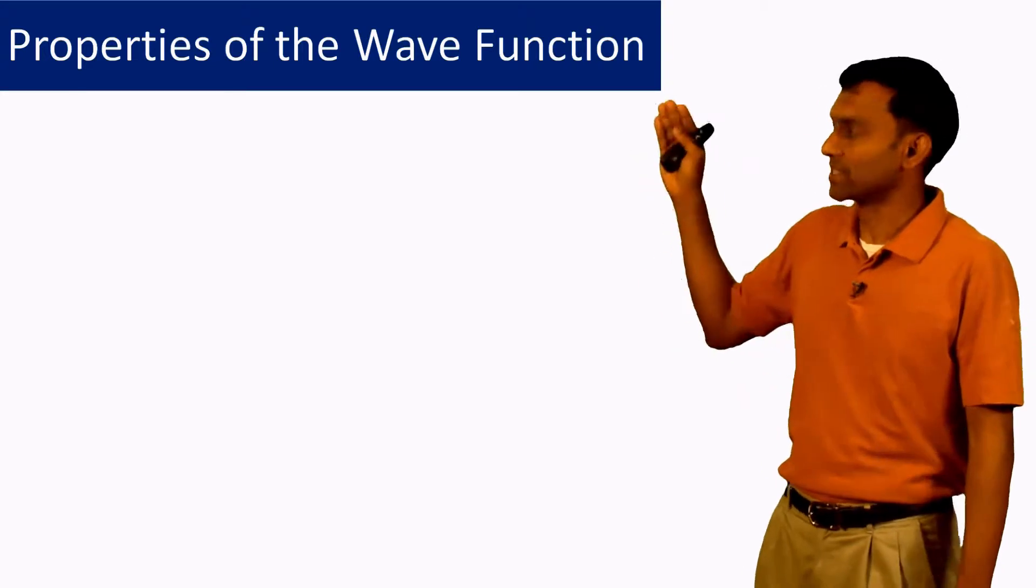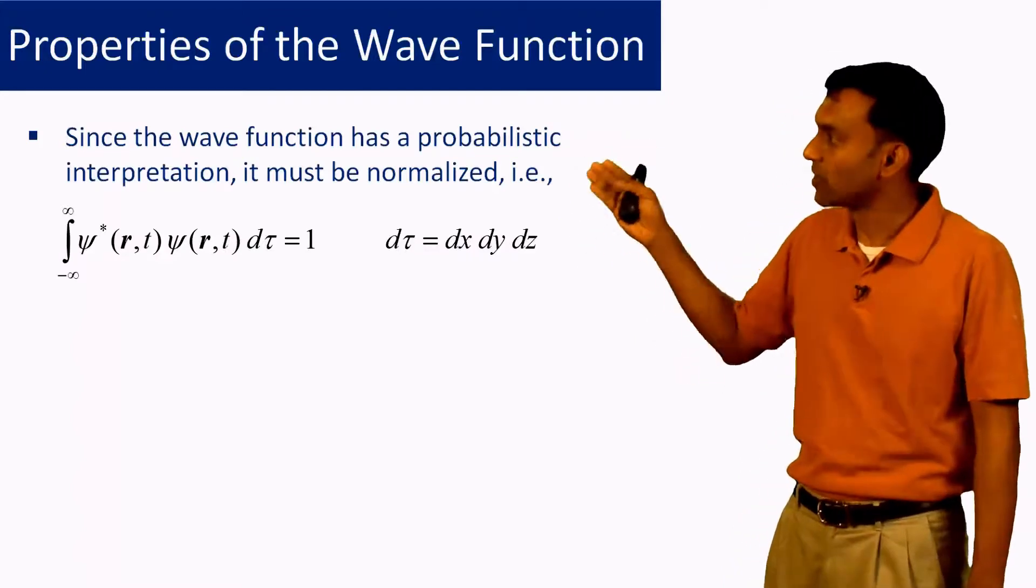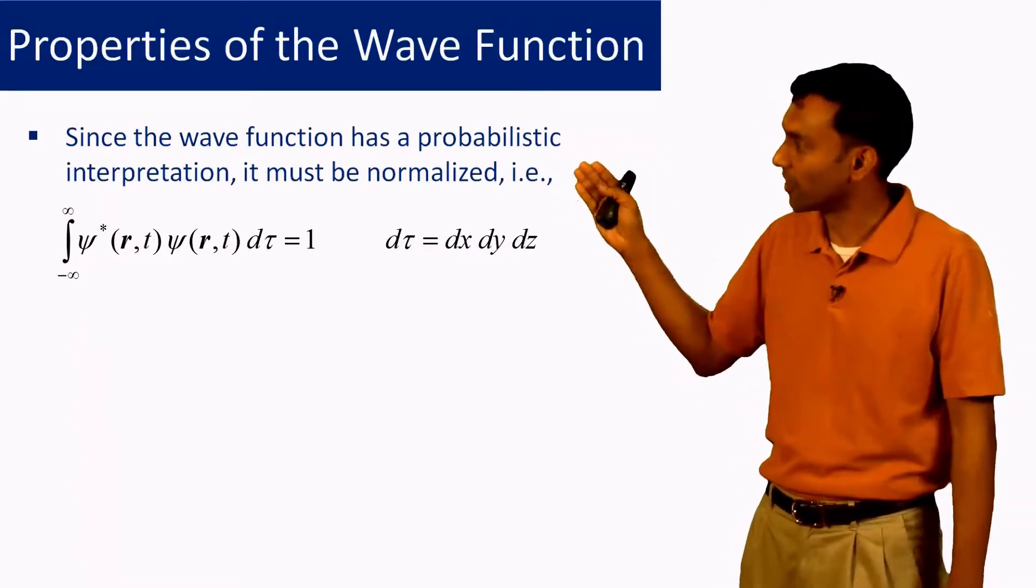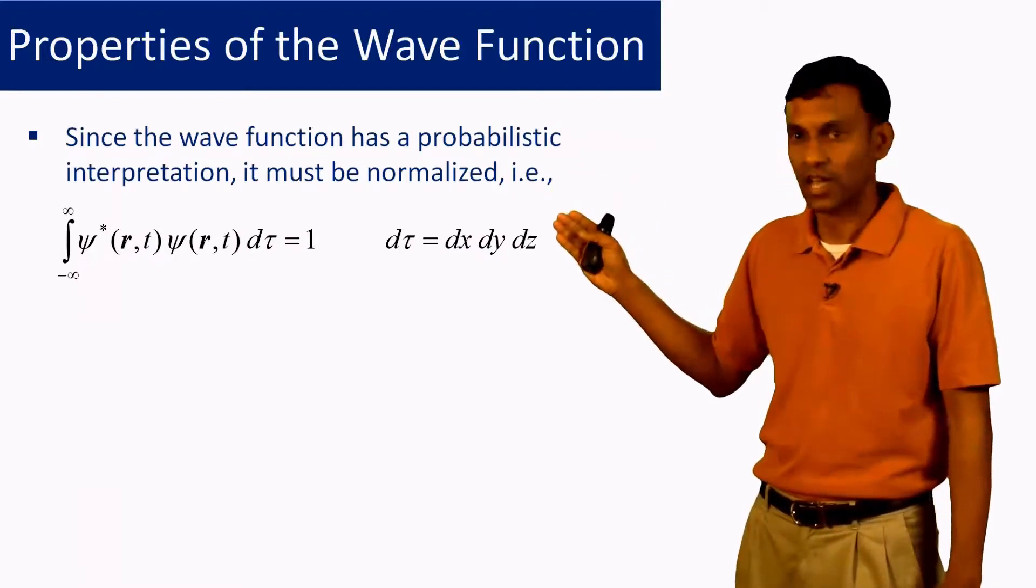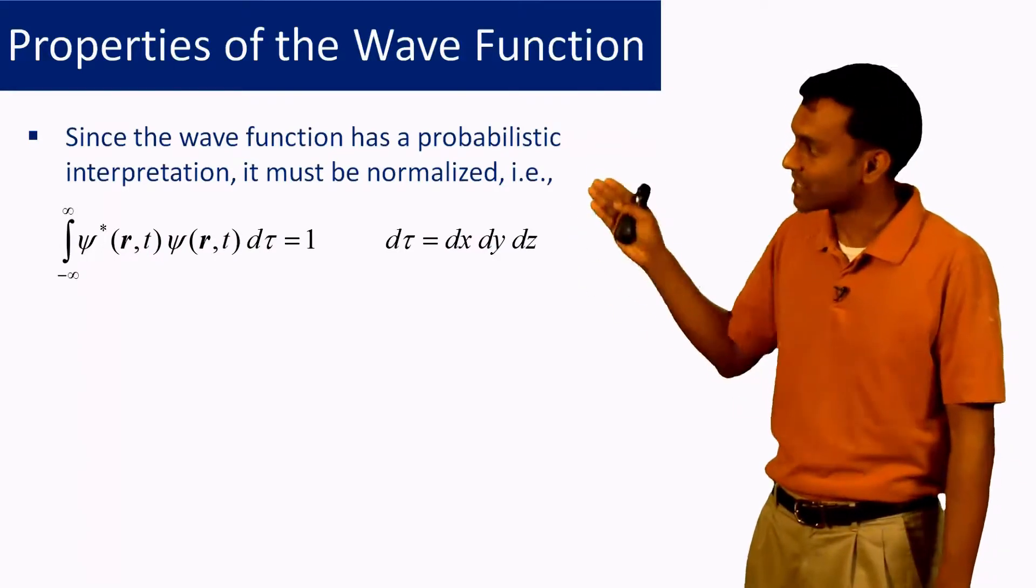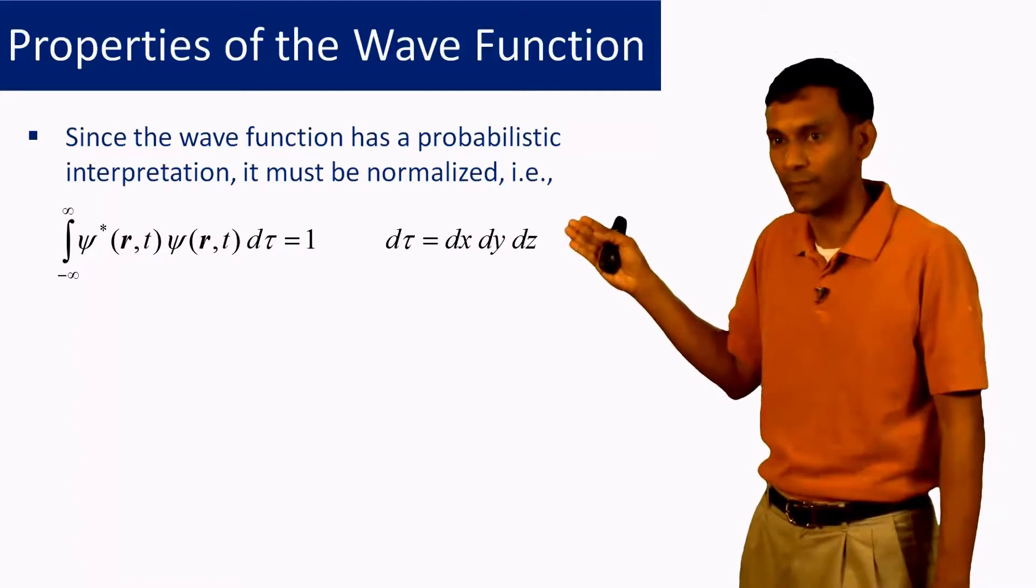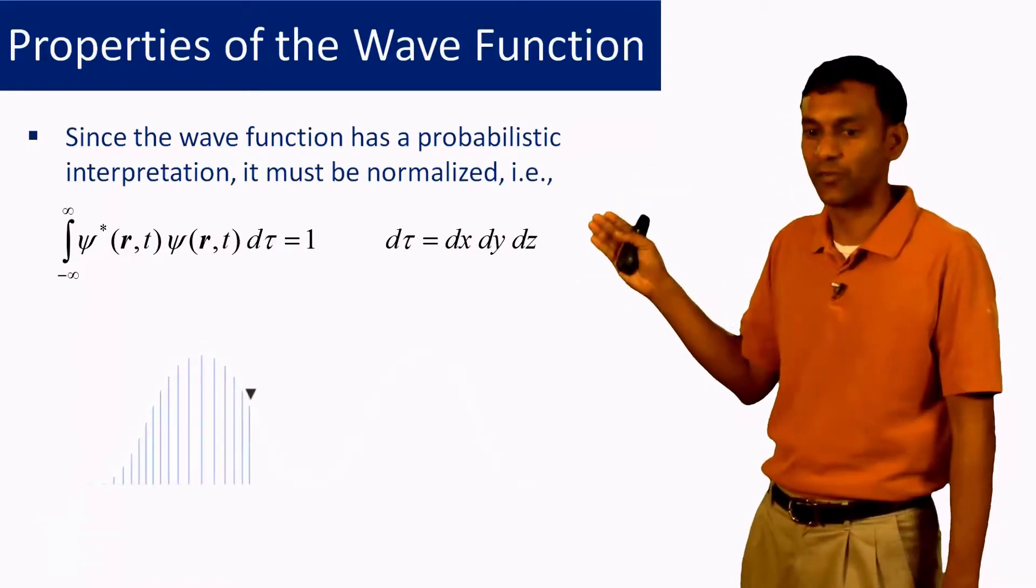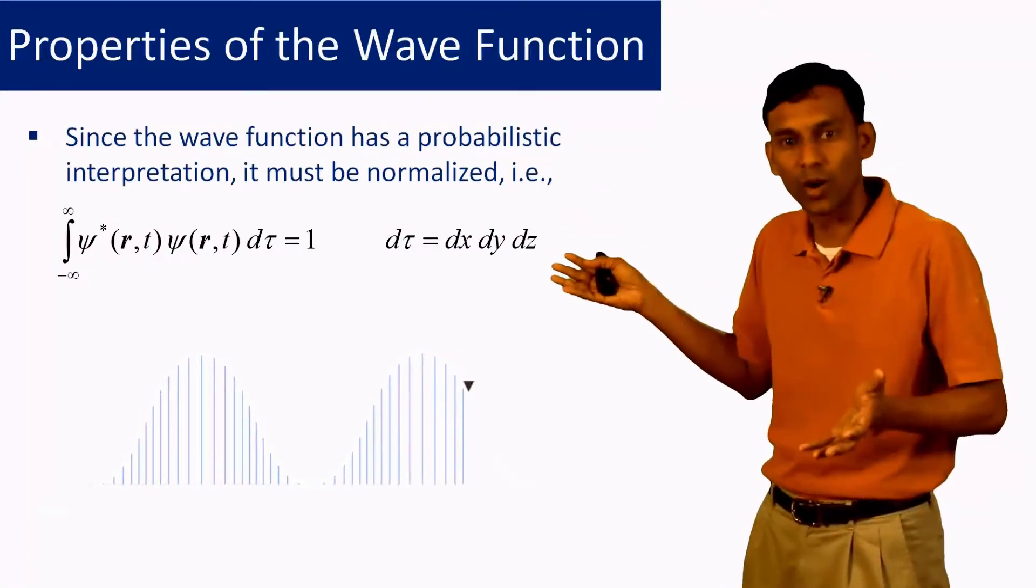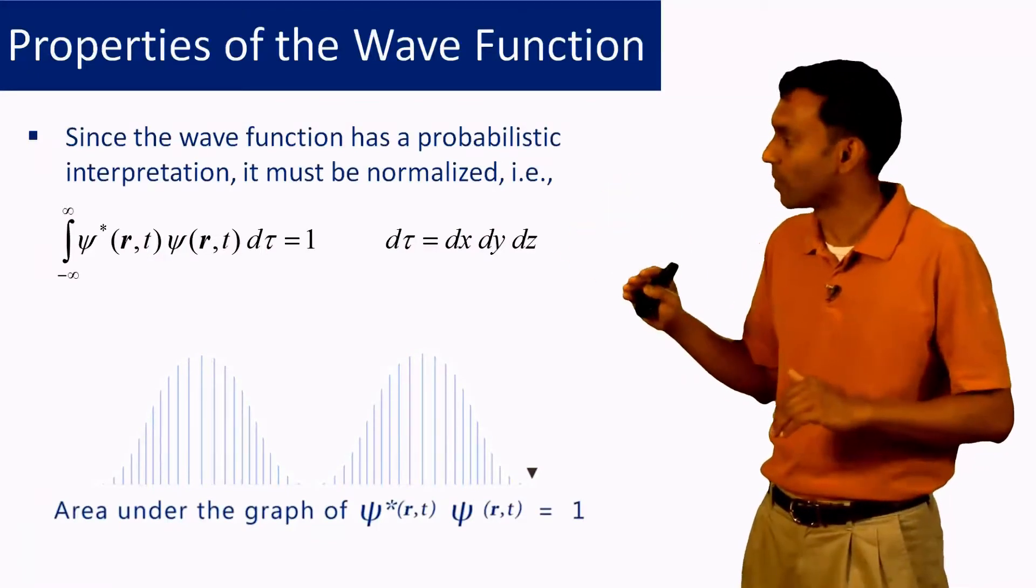There are certain properties that the wave function has. One of these properties is related to this probabilistic interpretation, and that is that the wave function should be normalized. What it means is that ψ*ψ multiplied by the volume element and integrated over all volume is equal to 1. This is physically saying that the probability of finding the particle everywhere summed together is equal to 1, which is just a statement about sum of probabilities of an event being equal to 1.